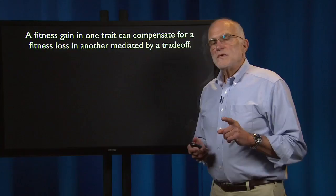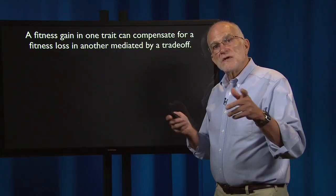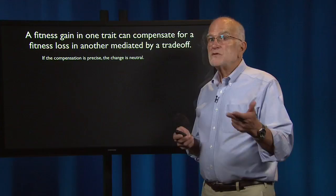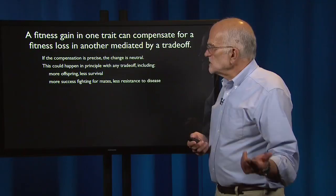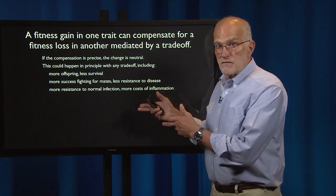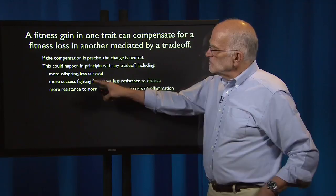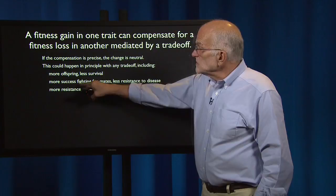Another reason for neutrality is that a fitness gain in one trait can compensate for a fitness loss in another if those traits are connected by a trade-off. If the compensation is precise, then change will be neutral. This could happen with any trade-off — including more offspring versus less survival, more success fighting for mates versus less resistance to disease, or more resistance to normal infection versus more costs of inflammation. If the compensation is precise, you could have people with very different numbers of offspring but the same reproductive success because of correspondingly different survival rates.